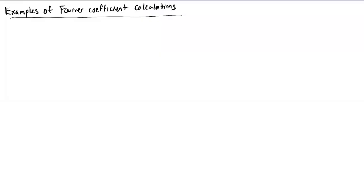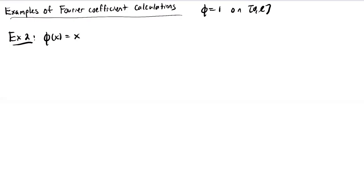Today we're going to begin by continuing what we were doing at the end of the last lecture, just looking at some examples where we calculate some particular sine, cosine, or full Fourier coefficients. Last time we looked at the case where the function phi was identically equal to one on the interval between zero and L and calculated the sine series. Now we're going to move on to a second example.